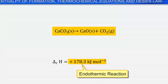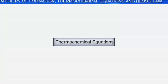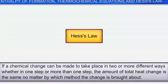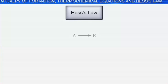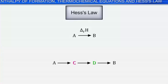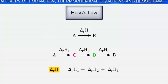Let us look at thermochemical equations and Hess's law. Hess's law states that if a chemical change can be made to take place in two or more different ways, whether in one step or more than one step, the amount of total heat change is the same no matter by which method the change is brought about. For example, the enthalpy of an overall reaction A giving rise to B along one route is ΔRH. If the same reaction occurs through another route with ΔRH1, ΔRH2, and ΔRH3, then ΔRH equals the sum of ΔRH1, ΔRH2, and ΔRH3.